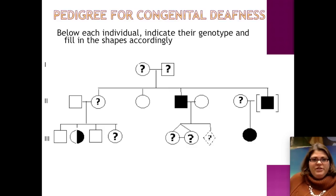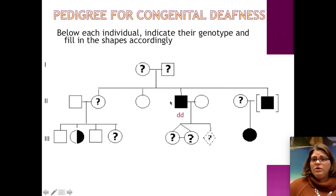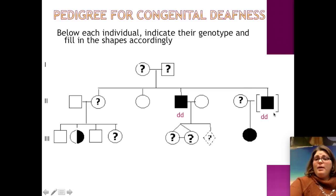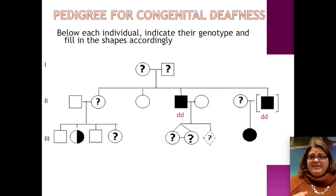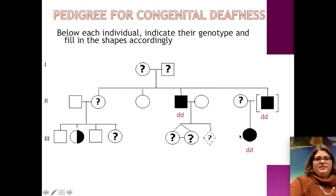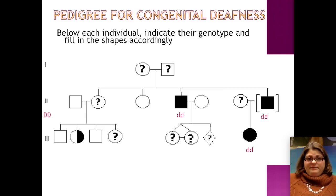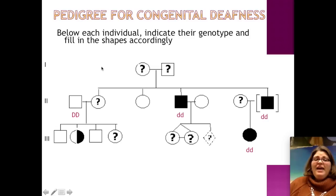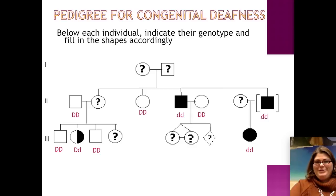Here's another example — much larger, three generations. Congenital deafness, one form of it, is caused by a recessive trait. Individual 2-4 is deaf, so he has two little d's. The adopted person also has the phenotype, so he too has two little d's. Their daughter, 3-8, would also be homozygous recessive. In this case, carriers are indicated on the pedigree, so anyone who's not filled in and not marked as a carrier has to be homozygous dominant — we can put big D, big D under all people who are not filled in. We know that the marked woman is heterozygous because she's a carrier.